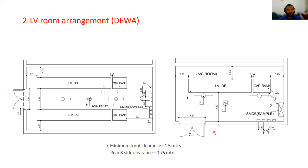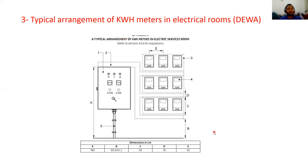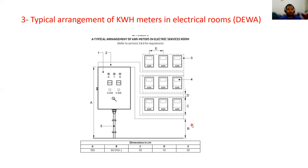Question three: LV room details — typical arrangement of kilowatt-hour meter installation. For an SMD base, minimum clearance required is 600 mm. Between the trunk and kilowatt-hour meter, minimum 500 mm is required. Trunks should be a minimum of 100 mm, and the distance between kilowatt-hour meters is 300 mm minimum. This is how the kilowatt-hour meter installation is arranged.